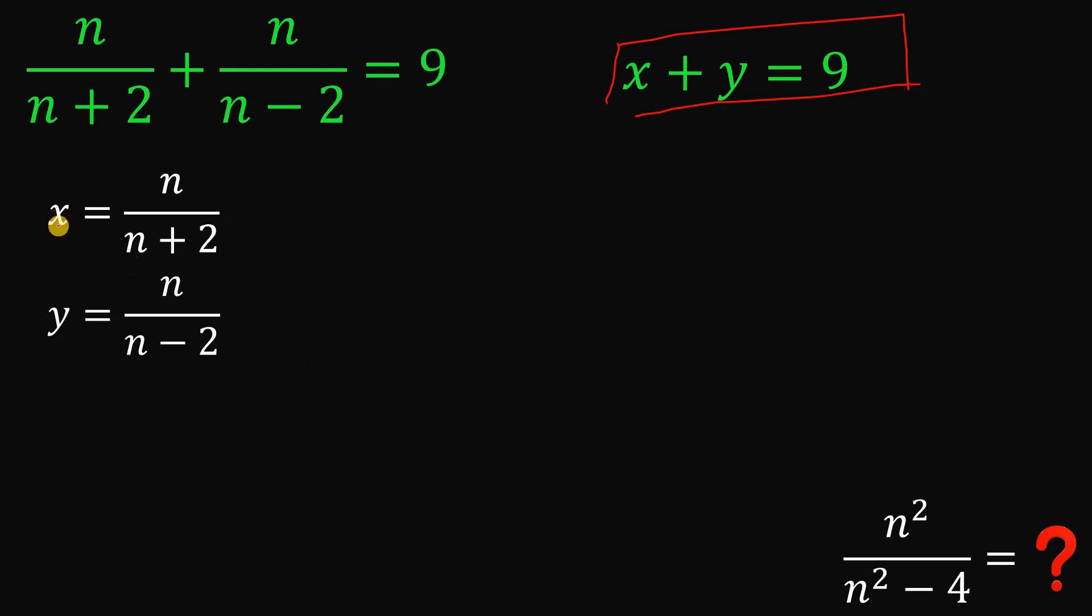What we're going to do is to take the reciprocal of this equation x equals n over n plus 2. If we take the reciprocal of this equation, we get 1 over x equals n plus 2 over n. And also, if we do the same thing on the other equation, we get 1 over y equals n minus 2 over n.